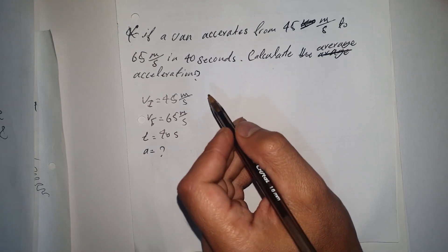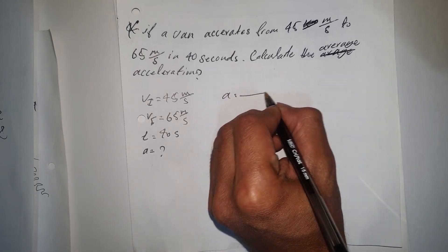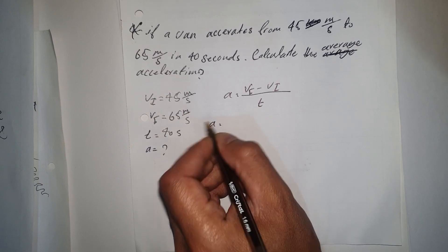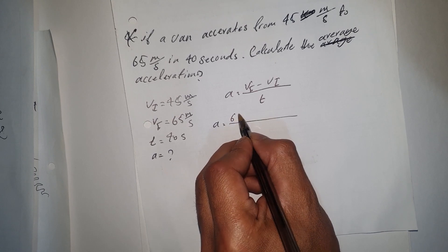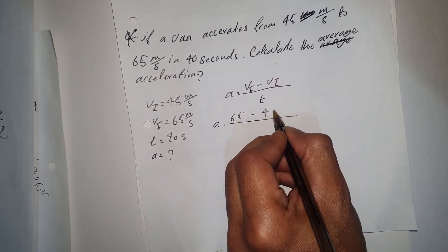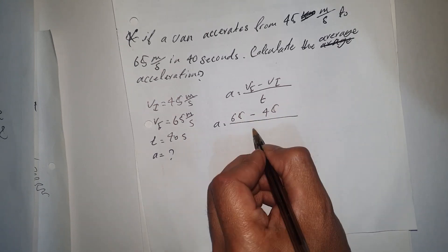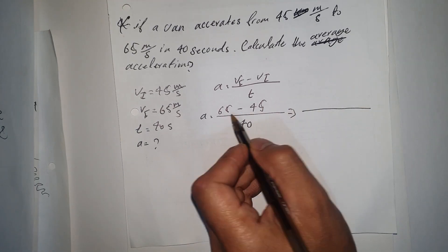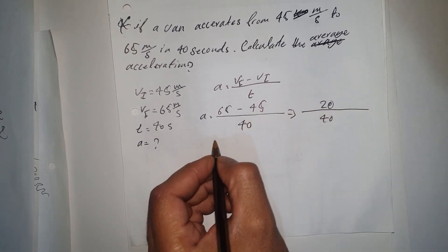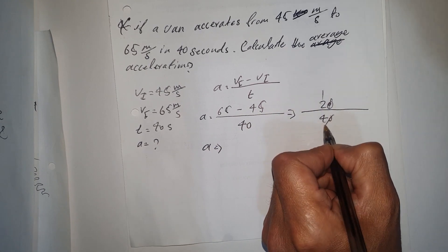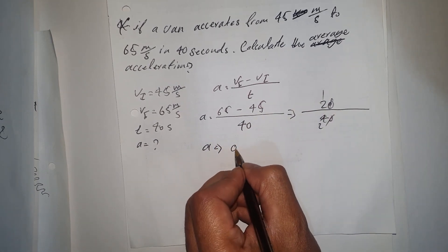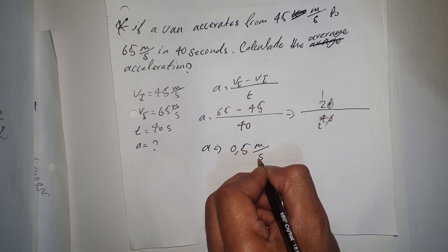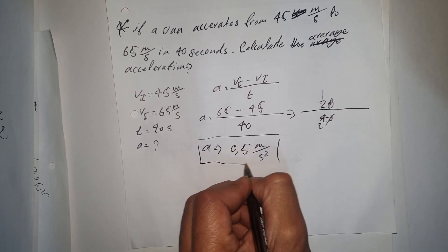Using the formula: acceleration = (final velocity − initial velocity) / time. So acceleration = (65 − 45) / 40 = 20 / 40 = 0.5 meters per second squared. So the acceleration for this example is 0.5 m/s².